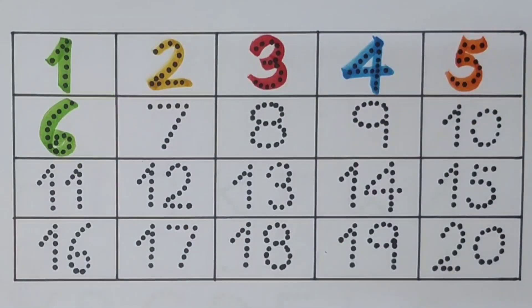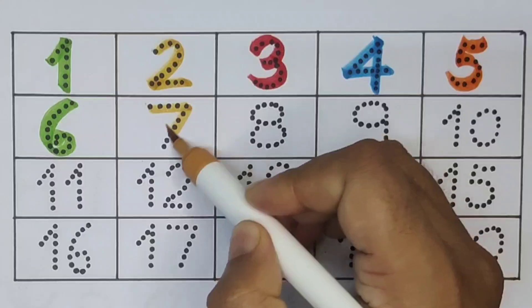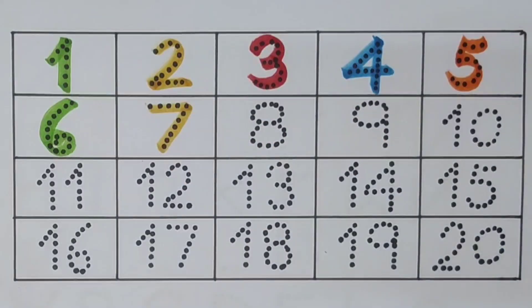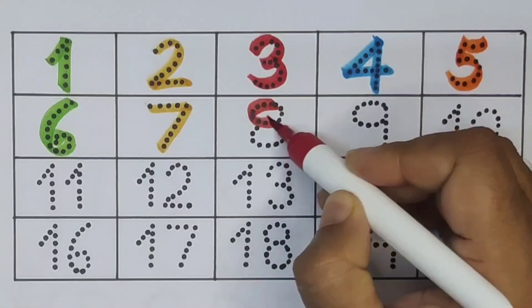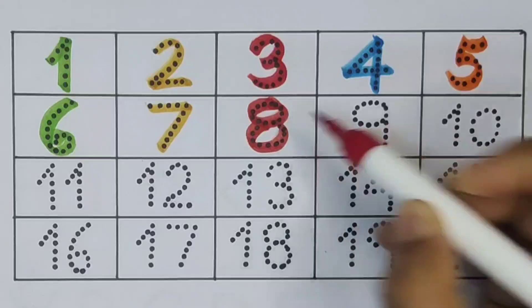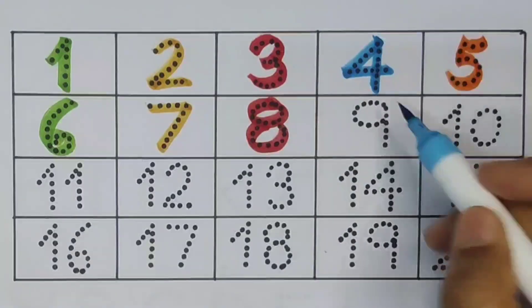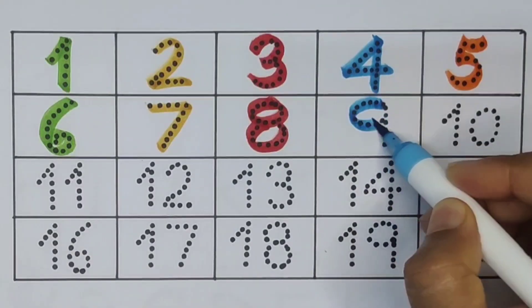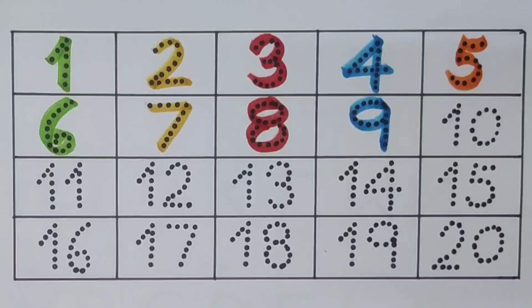Next, seven, number seven. Next, eight, number eight. Next, nine, number nine. Next, ten: one zero.